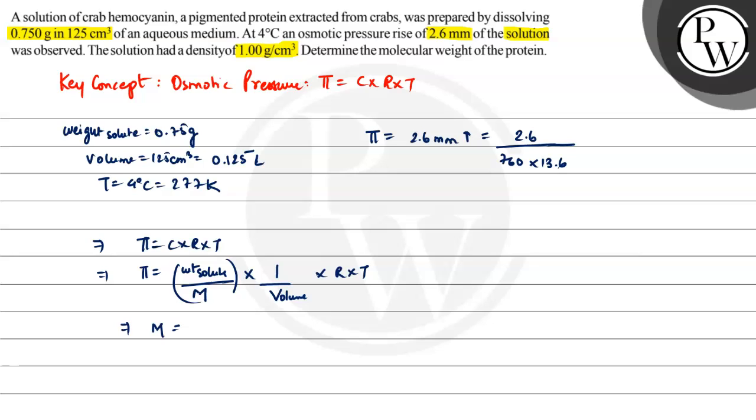Substituting the values: M equals weight of solute (0.75 grams) divided by π (which is 2.6/(760 × 13.6)), divided by volume (0.125), then multiplied by R (0.0821) and temperature (277 K). This will come out to be 5.4 × 10⁵ grams per mole.